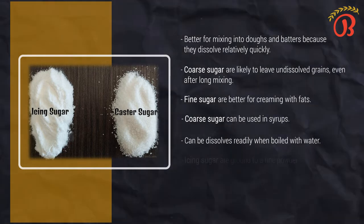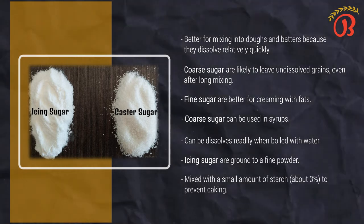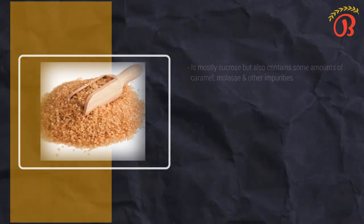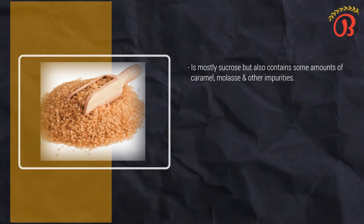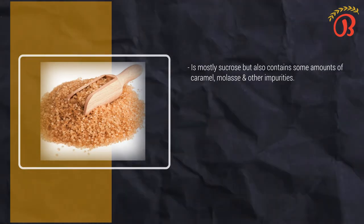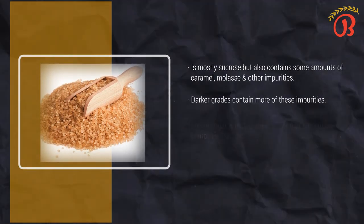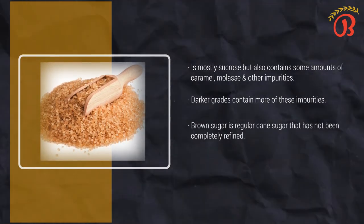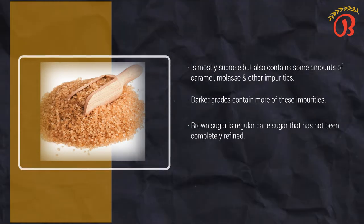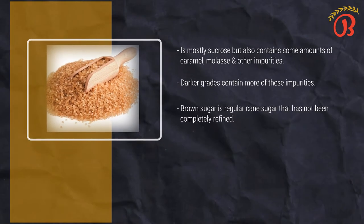Confectioners' sugars are icing sugars. These are ground to a fine powder and mixed with a small amount of starch — about 3% — to prevent caking. Now let's talk about brown sugar. Brown sugar is mostly sucrose, but it also contains varying amounts of caramel, molasses, and other impurities which give it a characteristic flavor and color. The darker grade contains more of these impurities. Basically, brown sugar is a regular cane sugar that has not been completely refined. However, it can also be made by adding measured amounts of these impurities to refined white sugar.